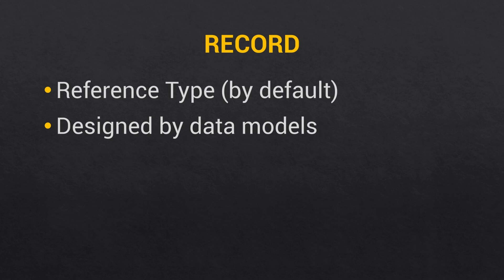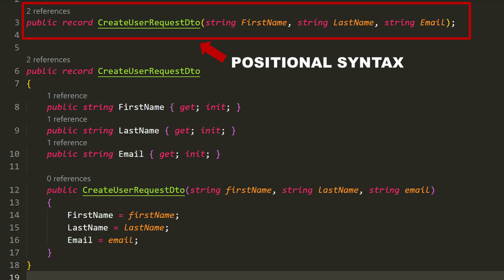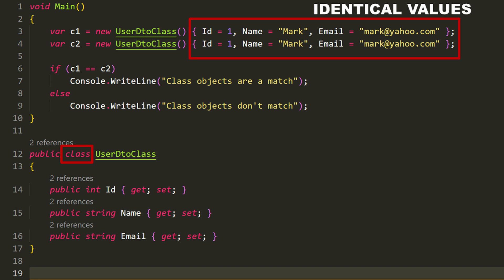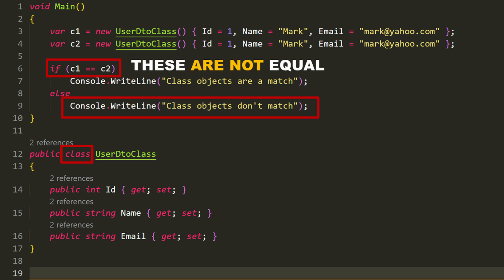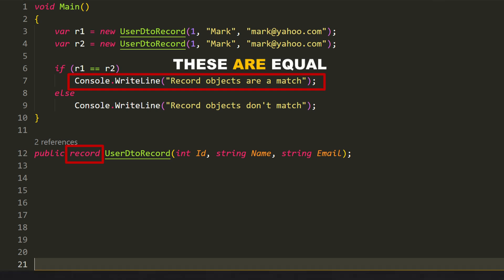That brings us to records. Records were introduced with C# 9 back in 2020 and were designed primarily to be data models. They are reference types by default, similar to classes, but records are immutable by default. They support positional syntax for really short and concise declarations. Probably the most notable thing about records is that they use value-based equality. If you create two instances of a class with each of the properties having exactly the same values and compare those two instances using the equals operator, the class objects don't match — whereas if you do the exact same thing using records with the same property values and compare them, the record objects do match.